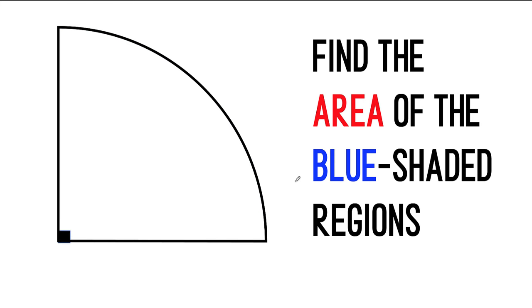Let's begin by looking at its basic components. We have a quarter circle here with a radius of 4 units. Then, we construct these two semicircles with a diameter equal to the radius of the quarter circle. So the radius of these two semicircles are both equal to 2 units.